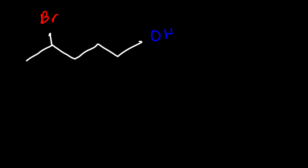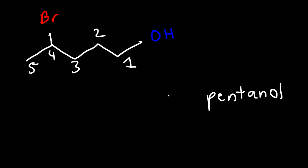Now let's move on to the next example — go ahead and name the following molecule. Which group should we give priority: the alkyl halide or the alcohol? The alcohol is the functional group that will contain the parent name and has more priority than the bromine atom. So we need to start counting from the alcohol: carbon one, two, three, four, five. We have a five-carbon alcohol, so it's pentanol. The OH group is on carbon one, so it's 1-pentanol. And we have a bromine on carbon four, so it's 4-bromo-1-pentanol.